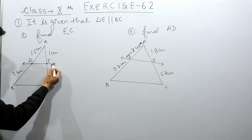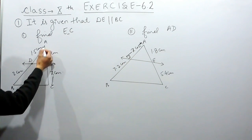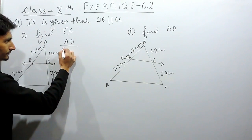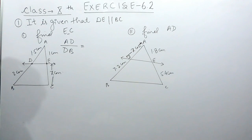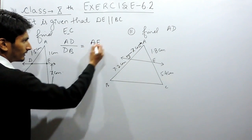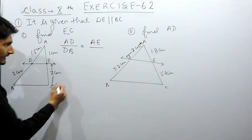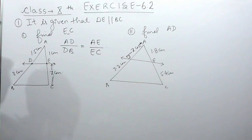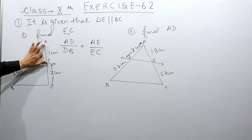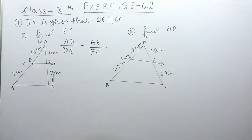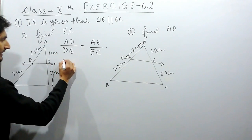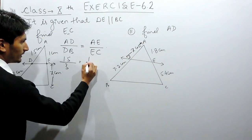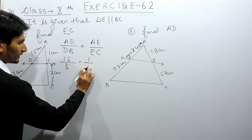Using the Basic Proportionality Theorem, the ratio AD over DB equals AE over EC. Now substituting the values: AD is 1.5, DB is 3, and AE is 1. We have to find EC, so let's suppose EC equals X centimeters.